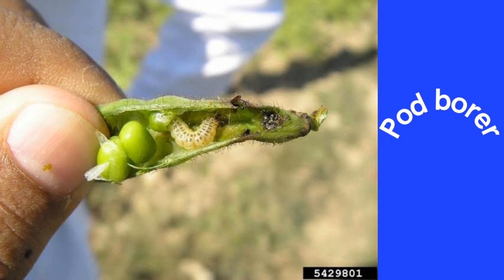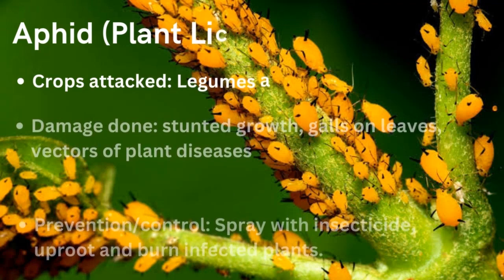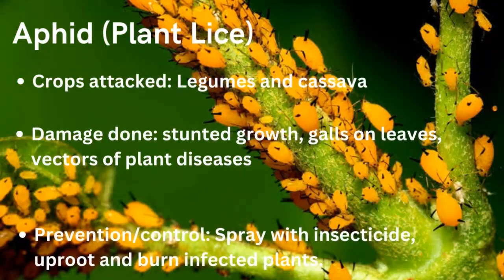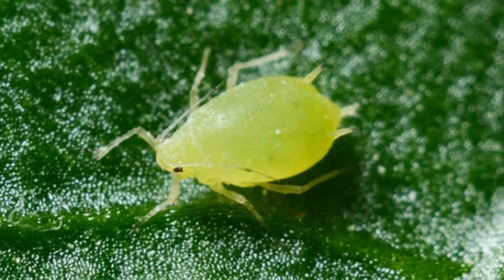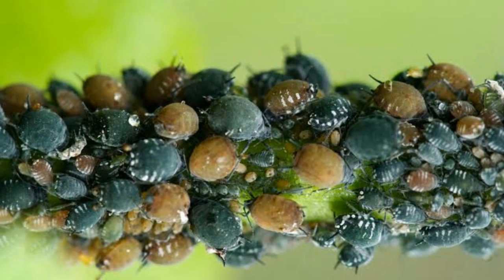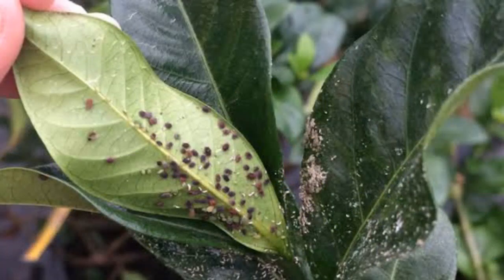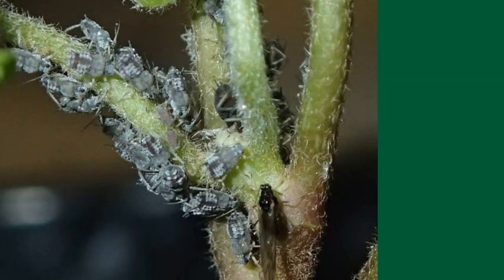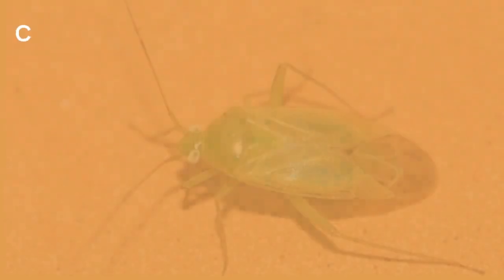The next pest is aphids, also referred to as plant lice. As you can see in the picture, the lice are all grouped onto one stem — that's what makes them plant lice. The crops they attack include legumes, especially cowpea and soybean. They cause stunting of growth and galls on the leaves. Aphids are also vectors of diseases such as rosette mosaic disease of cowpea. Preventive measures include spraying with insecticide and uprooting and burning infected plants — which is a physical or mechanical method of crop pest control.